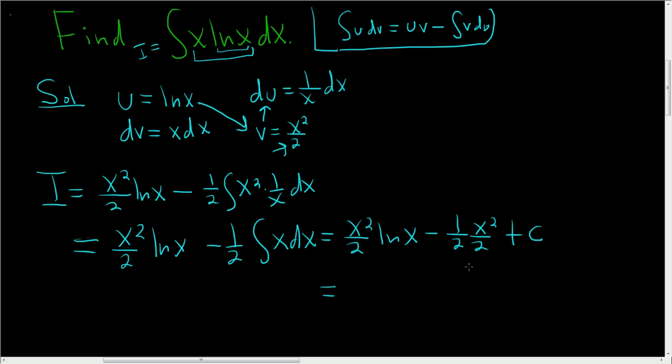To finish, we can multiply the 2s. So (x²/2)ln(x) minus x²/4 plus our constant.